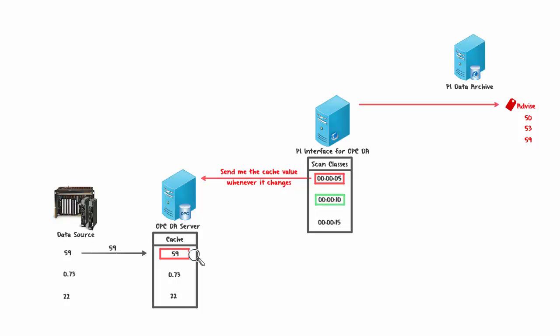For the second Scan Class, if the PI Interface for OPC DA finds a Polled Point, it makes a request every 10 seconds for the Cache Value on the OPC Server. The first Cache Value of 0.73 gets sent to the Polled Point. Ten seconds later, the PI Interface makes a new request, but if the Cache Value hasn't changed, this 0.73 is again sent to the Polled Point — and again 10 seconds later if there's still no change.